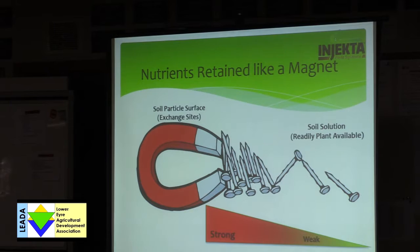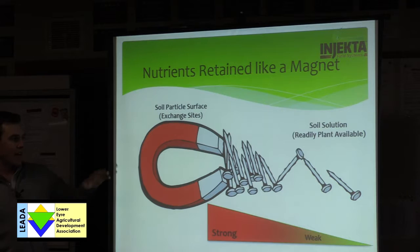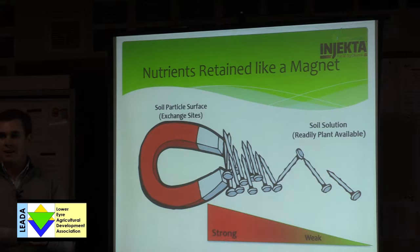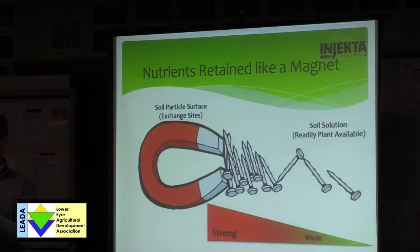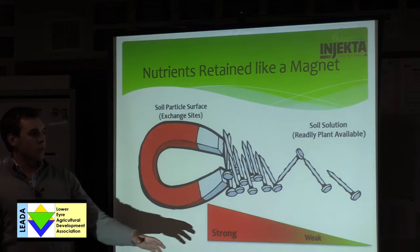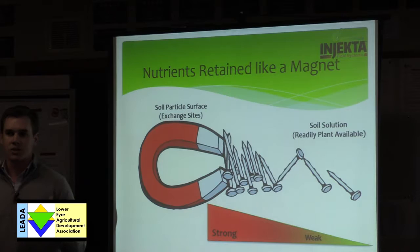Nutrients are retained to those battery terminals like a magnet. Your cation exchange capacity is the face of your soil particles — that's where most of your charge is to hold onto those nutrients, and that provides your full bank account. When you look at your soil test, you'll see 3,000 parts per million of calcium. It doesn't mean all that calcium is there ready for the plant to take up now — it's what the lab thinks the plant can access over a season. But what the plant actually accesses is what's in soil solution; what's weakly held is readily available for plant uptake.